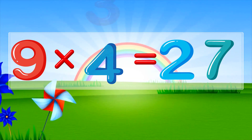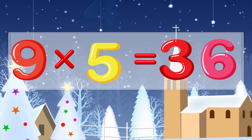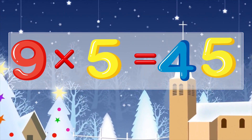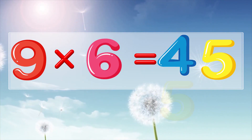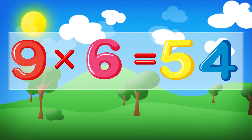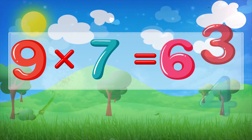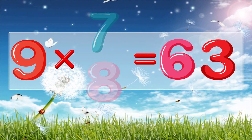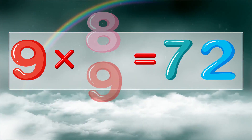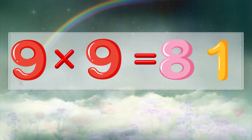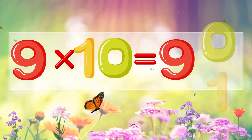Nine times four is thirty-six, nine times five is forty-five, nine times six is fifty-four, nine times seven is sixty-three, nine times eight is seventy-two, nine times nine is eighty-one, nine times ten is ninety.